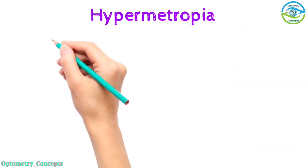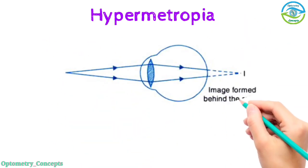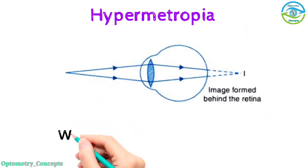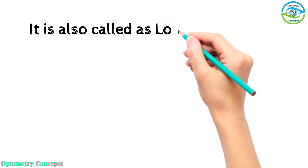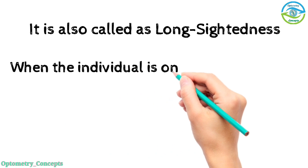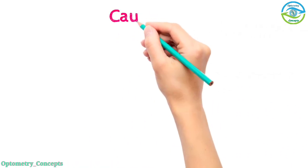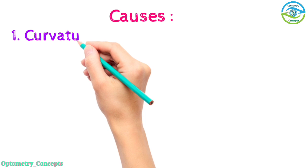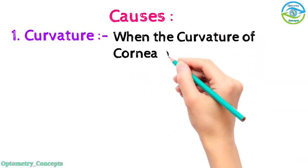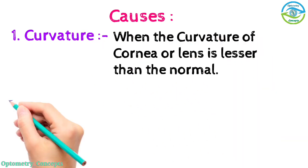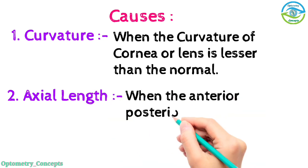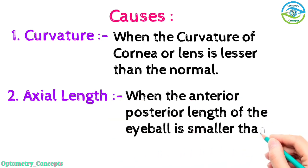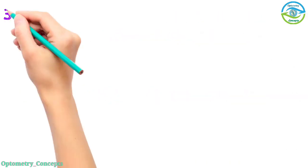Hypermetropia is when the rays of light coming from infinity are focused behind the retina when accommodation is at rest. It is also known as long-sightedness, where the individual is only able to see at distance. Causes: curvature - when the curvature of cornea or lens is lesser than normal; axial length - when the anterior-posterior length of the eyeball is smaller than normal.